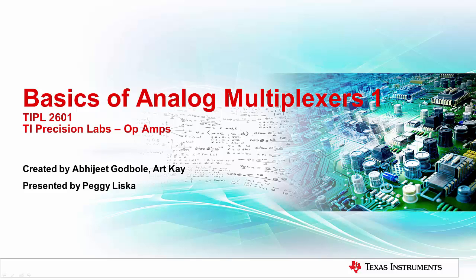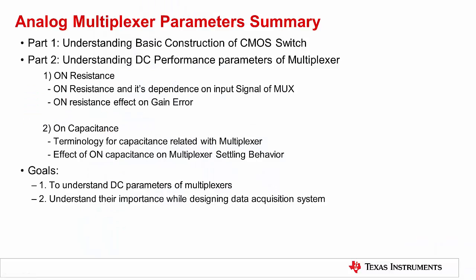Hello, and welcome to the TI Precision Lab series on basics of analog multiplexers. This video will provide an overview of the DC performance parameters of multiplexers. The goal of this series is to understand the DC performance parameters of multiplexers and how they affect data acquisition system performance. This video series explains how the parameters listed in an analog multiplexer's datasheet can be used to understand system performance limitations and error sources.